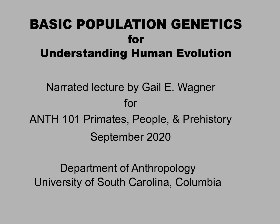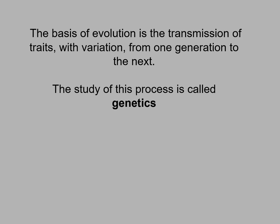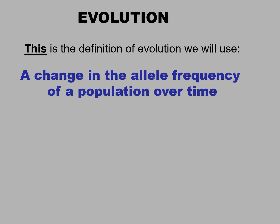Today's topic is Basic Population Genetics for Understanding Human Evolution. The basis of evolution is the transmission of traits with variation from one generation to the next, and the study of this process is called genetics. The definition of evolution that we will use in this class is a change in the allele frequency of a population over time.